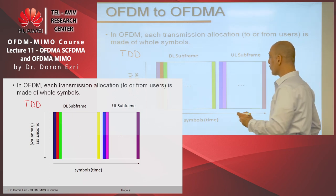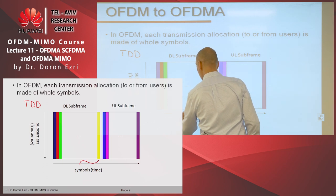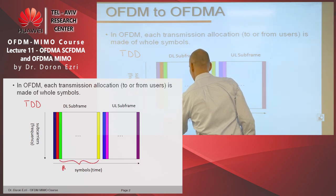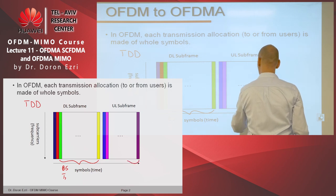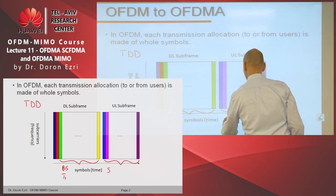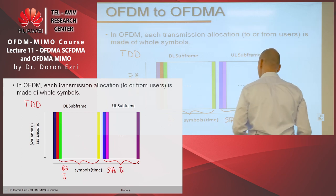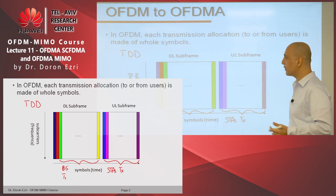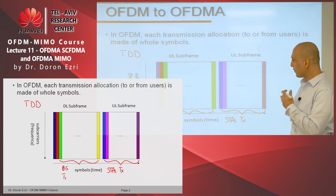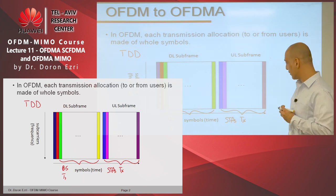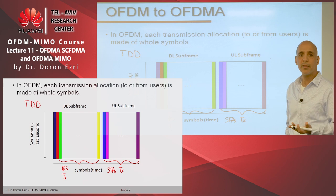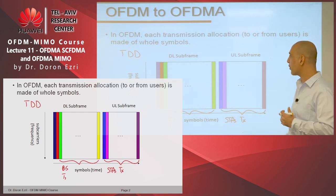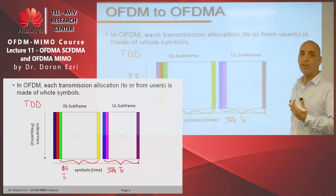We have a downlink subframe of some duration — this is when the base station transmits — followed by an uplink subframe in which the STAs transmit. This is done on the same frequency; this scheme is called TDD. It's not very important for our discussion but it is an important example. For example, Wi-Fi is TDD — we have the same frequency for both the AP transmission and the STAs transmission.